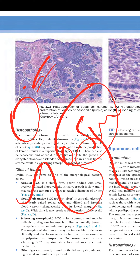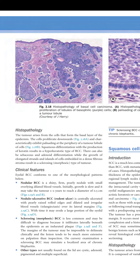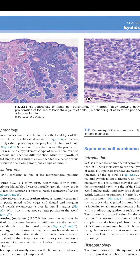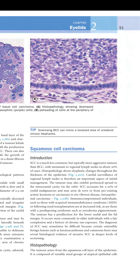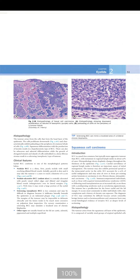The rodent ulcer has rolled edges and with time may erode a large portion of the eyelid. Cicatrizing/morphoeic BCC is less common and may be difficult to diagnose because it infiltrates laterally beneath the epidermis as an indurated plate. Its margins may be impossible to delineate clinically, and lesions tend to be much more extensive on palpation than on inspection. A cicatrizing BCC can mimic a localized area of chronic blepharitis. Other types not usually found on the lid include cystic, adenoid, pigmented, and multiple superficial.